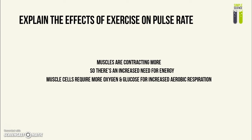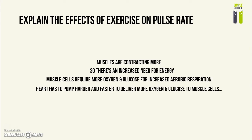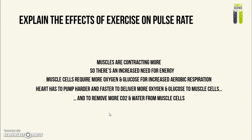Therefore, they require an increased amount of oxygen and glucose for the increased amount of aerobic respiration, which means that the heart has to pump harder and faster in order to deliver more blood and glucose to muscle cells in a shorter amount of time. The blood doesn't just deliver materials to the cells — it also takes away the wastes from the cells. So this means we'll be able to remove more carbon dioxide and water from muscle cells in a shorter period of time, because the muscle cells are producing more carbon dioxide and water than usual, just as they need more oxygen and glucose, because they are aerobically respiring more.